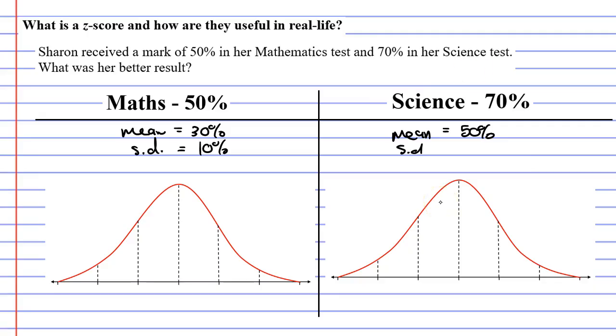I'm going to tell you that the standard deviation for the science test was 15%. Now, we need to fill in these bell curves first. Now, we've already done the maths bell curve, so I'm going to copy this down below.